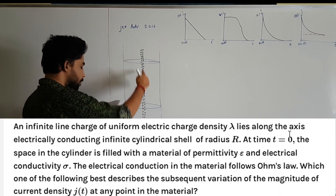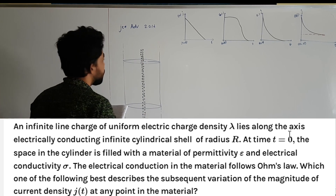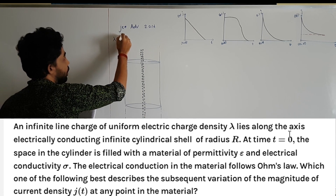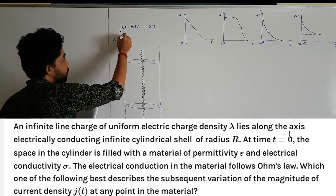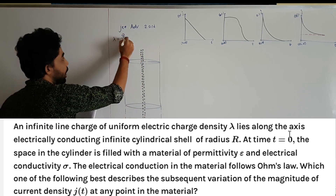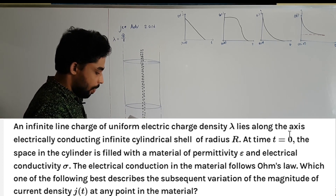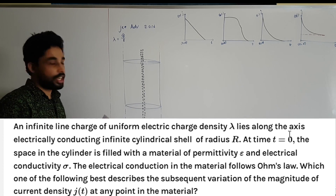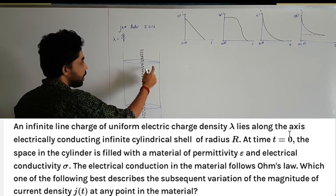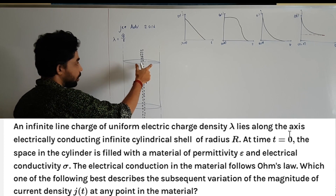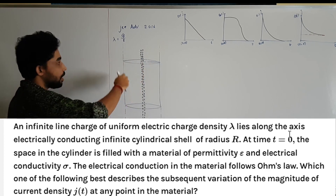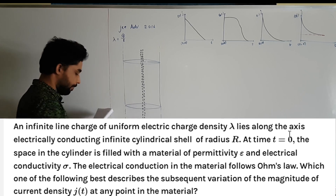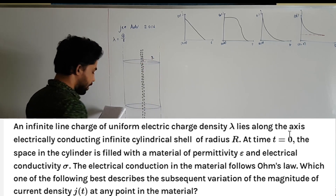An infinite line charge of uniform electric charge density lambda — where lambda is the total charge present divided by length — lies along the axis of an electrically conducting infinite cylindrical shell. This is an infinitely long conducting cylindrical shell of radius r.